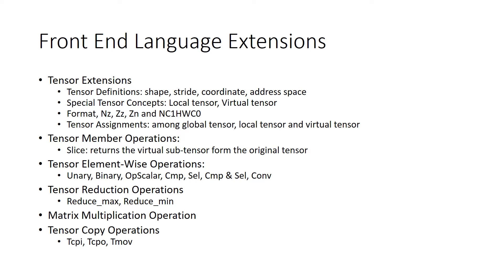Local tensor means the compiler will maintain the tensor. Virtual tensor is actually the view of the original tensor — it will share the same memory of the original tensor. We also support several formats of the tensor, such as big N, small Z, big Z, and small Z.